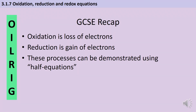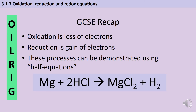At GCSE you were introduced to the idea that the process where electrons are lost is called oxidation, the process where they're gained is called reduction, and if both of these processes happen that's what we call a redox reaction. These processes can be demonstrated using what we call half equations. You would probably have met half equations in the context of electrolysis, but they are also applicable for chemical reactions.